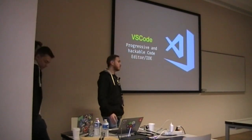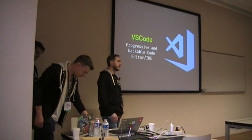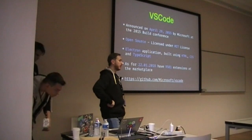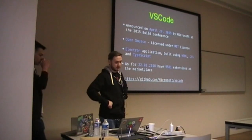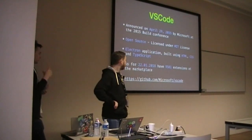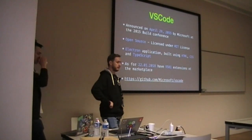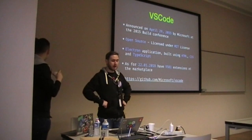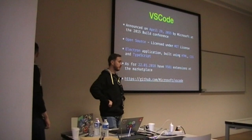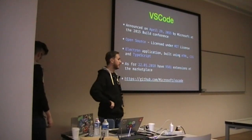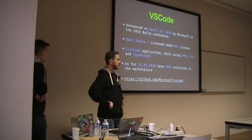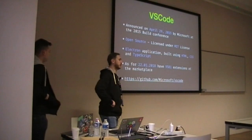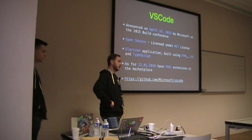For those who don't know, Visual Studio Code is a new progressive IDE or code editor. It was announced by Microsoft in 2015. It's open source, licensed under the MIT license — the whole source code is completely open and hosted on GitHub. It's an Electron application, so it's a text editor built using web technologies. It has a lot of extensions and plugins, so if you don't have something in vanilla Visual Studio Code, you can search for extensions or create your own.